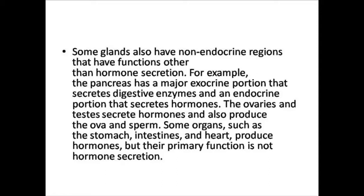In the pancreas, there are two different portions. One is the exocrine portion, which secretes digestive enzymes. The other is the endocrine portion, which secretes hormones. In addition, ovaries and testes also secrete hormones. The ova and sperm, which are gonadal cells, also secrete hormones.